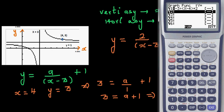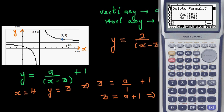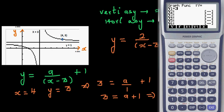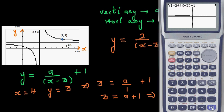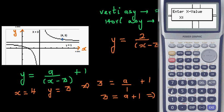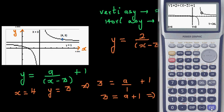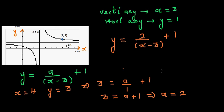The equation is y = 2 / (x − 3) + 1. Let's verify on the calculator: set scale to 10 by 10, then type 2 / (x − 3) + 1 and draw the graph. Using Y-calc, when x = 4, y = 3 — confirmed. This is the way you can write the equation of a rectangular hyperbola.